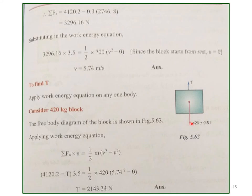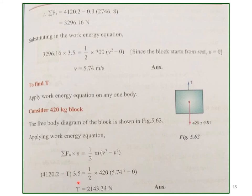To find the tension in the string, apply the work-energy equation to any one block's free body diagram. Taking Block B (4120.2 N hanging block): net force in direction of motion is 4120.2 − T. Applying work-energy over 3.5 m with v = 5.74 m/s and u = 0: (4120.2 − T) × 3.5 = ½mv², giving tension T = 2143.34 N.